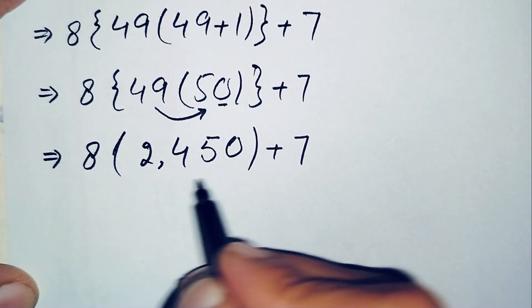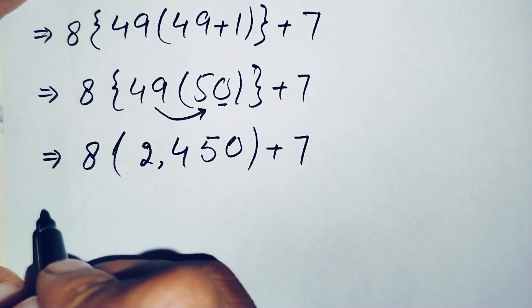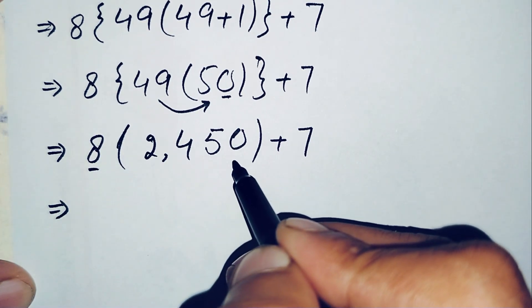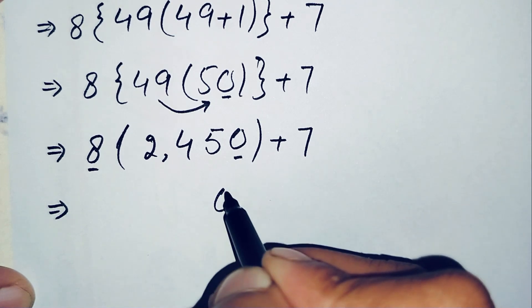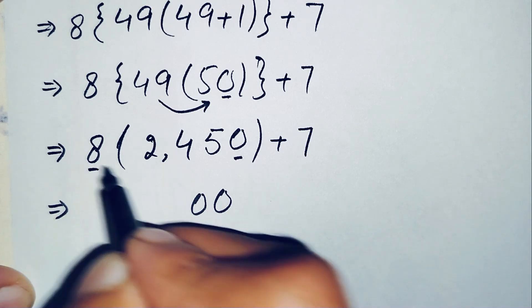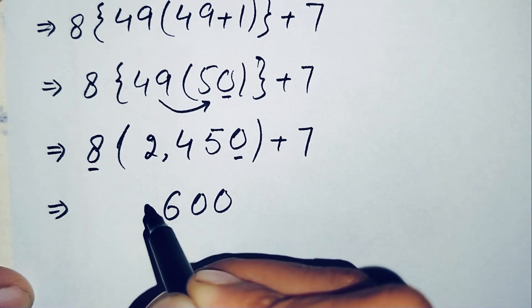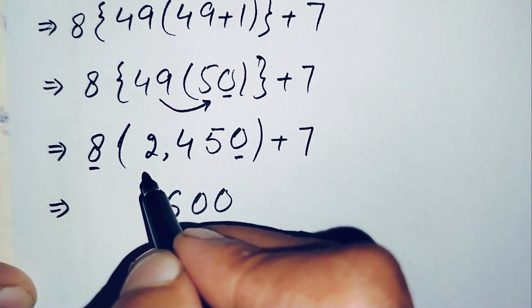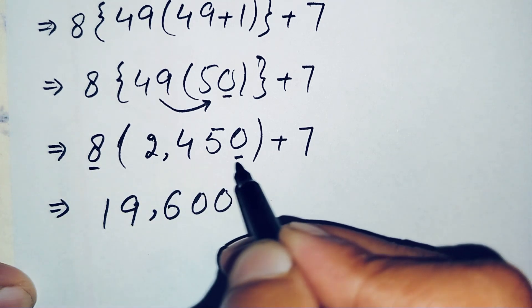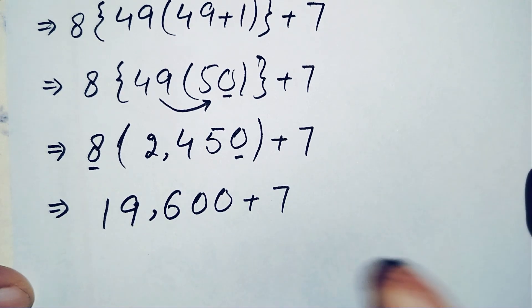Now we multiply eight by two thousand four hundred and fifty without a calculator. Starting from the ones position: eight times zero is zero; eight times five is forty, write zero carry four; eight times four is thirty-two, plus four is thirty-six, write six carry three; eight times two is sixteen, plus three is nineteen. So eight times two thousand four hundred and fifty equals nineteen thousand six hundred.